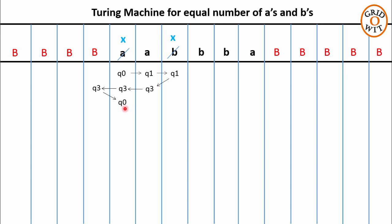Now notice one important point here. From the second iteration onwards, q0 will find some X at the starting. But q0 on reading X will move towards the right, skipping all these Xs and search for either A or B. Now the next symbol q0 reads is symbol A. As we have done in the first iteration, on reading A, q0 will replace this symbol with X, move towards the right, and change its state to q1. The Turing machine changes its state to q1 just to remember that the machine has already replaced one A with X in the current iteration, and next it should search for symbol B. Also notice that from the second iteration onwards, q1 may encounter some X along with As, which it should skip and search for symbol B.